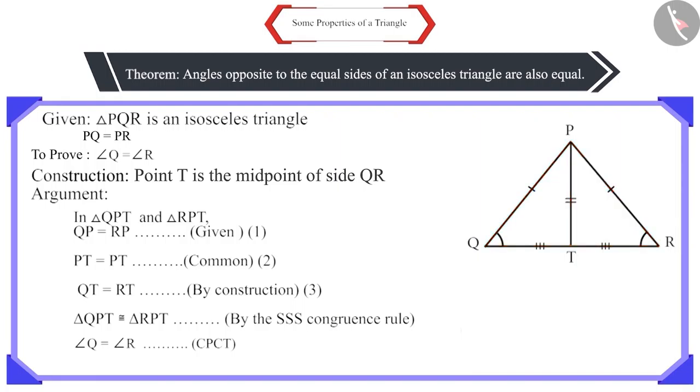Therefore, according to the SSS congruence rule, these two triangles will be congruent. And the corresponding parts of congruent triangles are equal. Therefore, angle Q and angle R will also be equal.